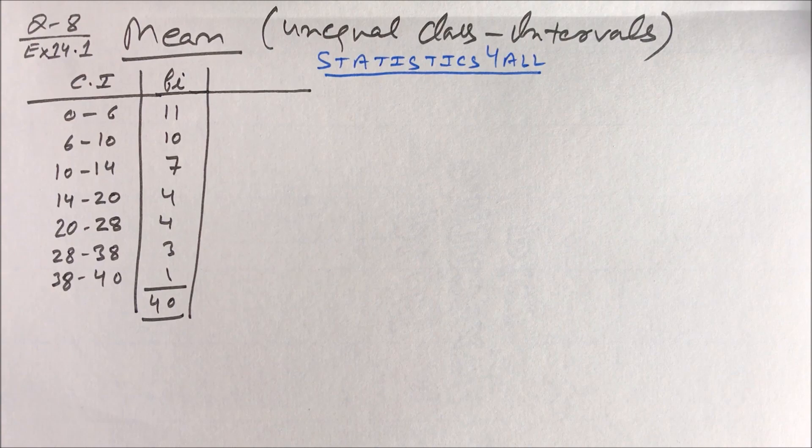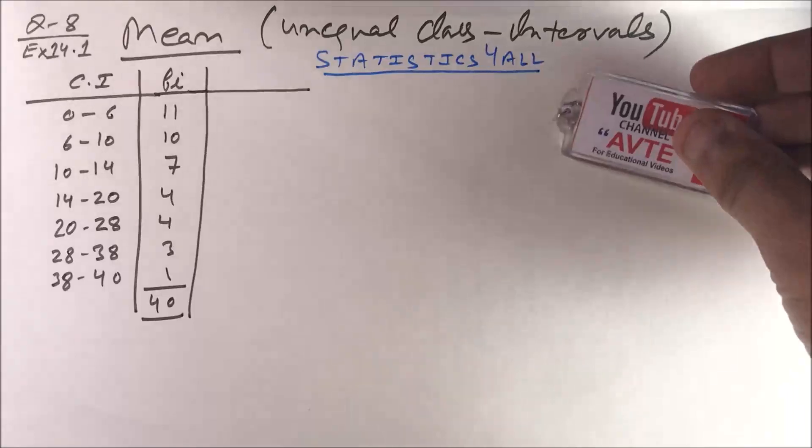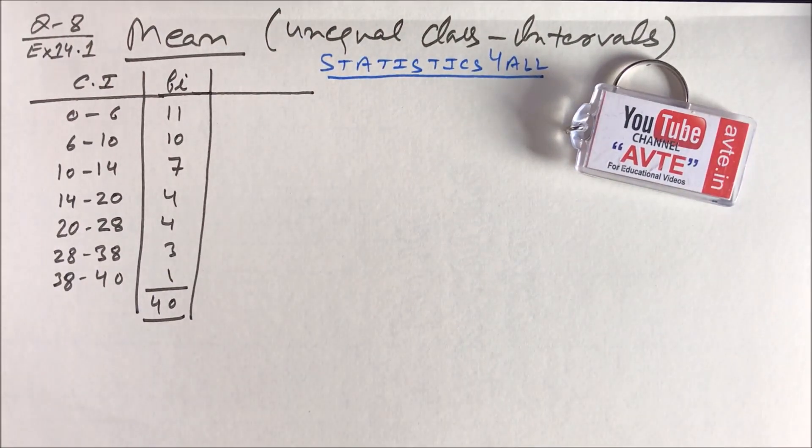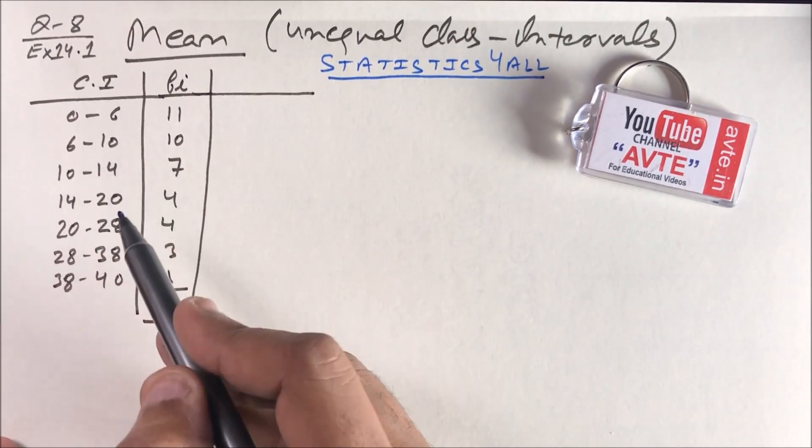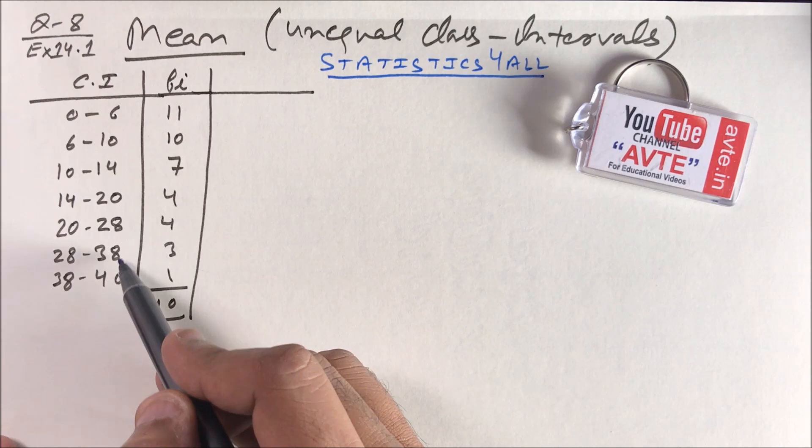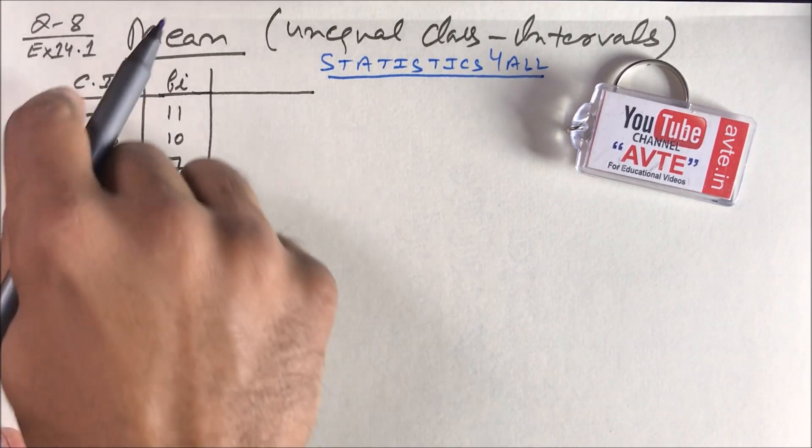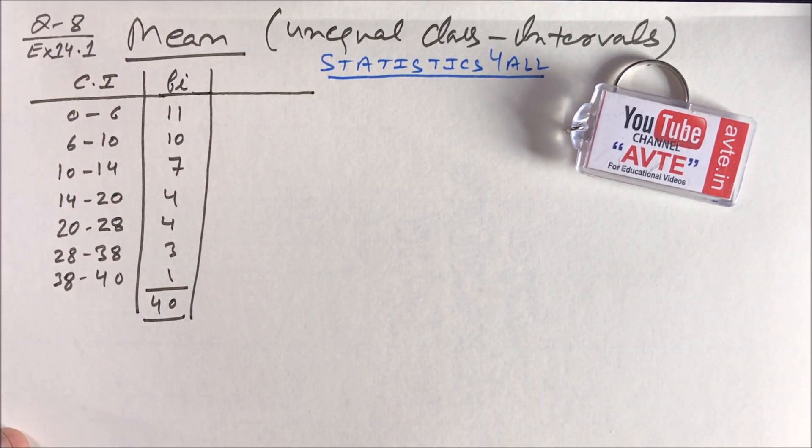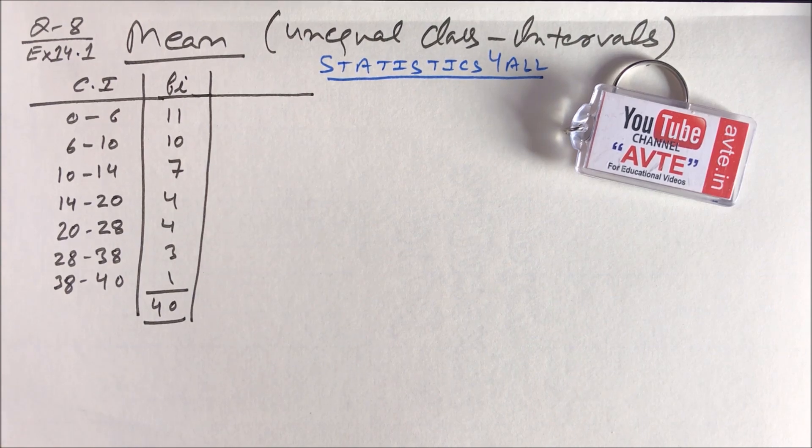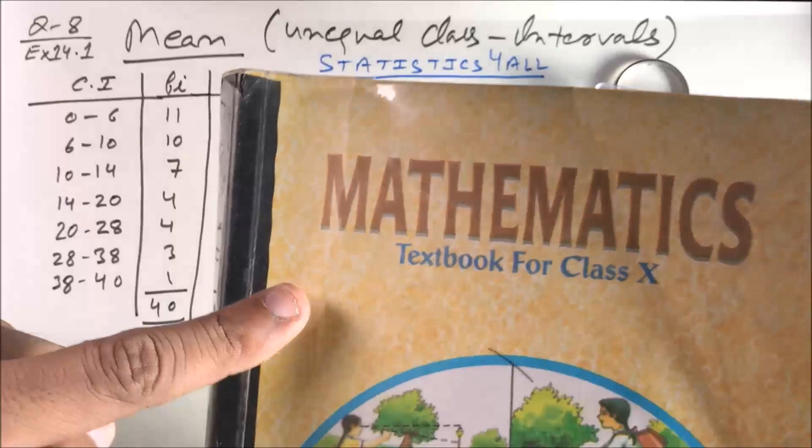Hello friends, welcome to the channel AVTE. Now we are doing a question on mean with unequal class intervals. It means your class size is not the same - here the class size is 6, 4, 4, 6, 8, 10. Here class size is not the same.